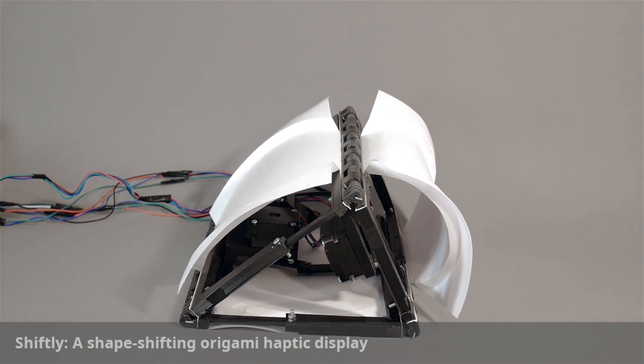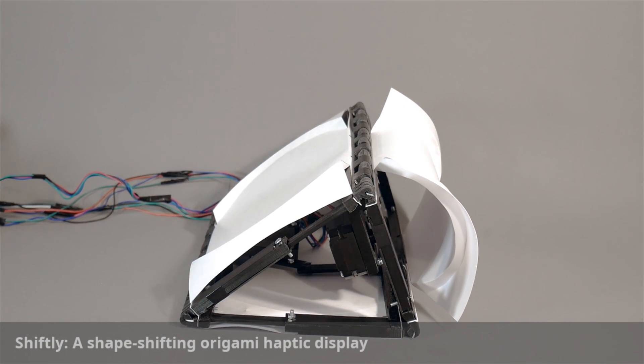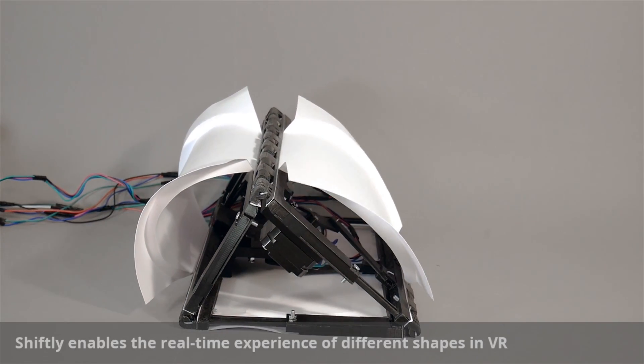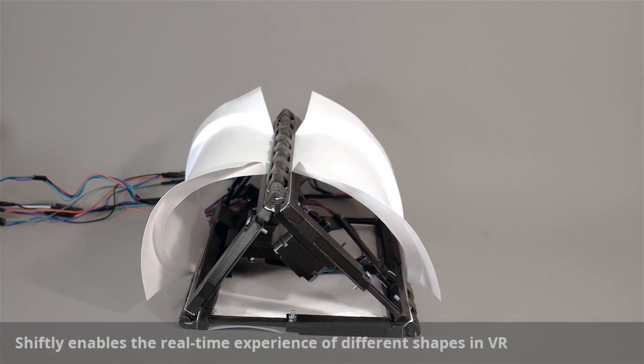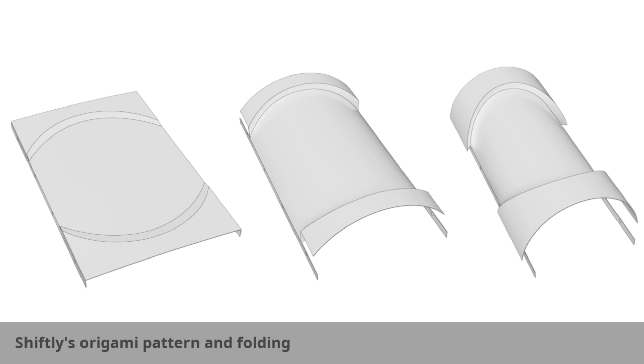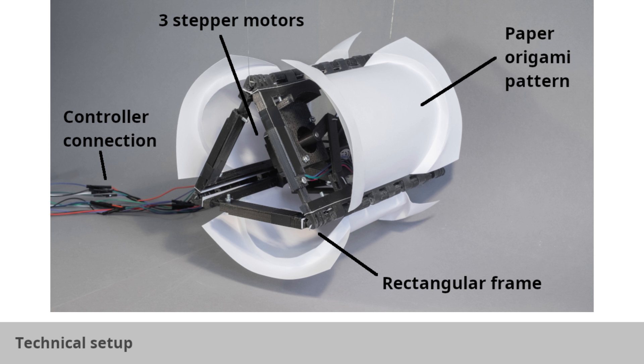Shiftly is a shape-shifting haptic display that employs origami to enable a real-time experience of different shapes and edges of virtual objects. We use a curved origami pattern and paper to allow transition from zero to positive stiffness by activating predefined creases. Our shape display employs a combination of three pieces of dense paper origami mounted on rectangular frames, actuated with three stepper motors.